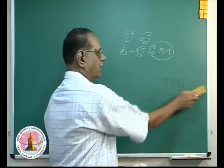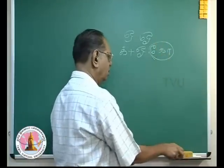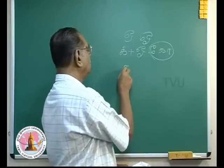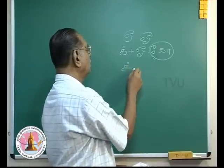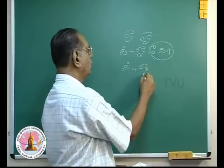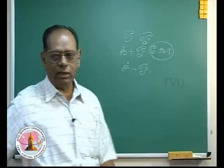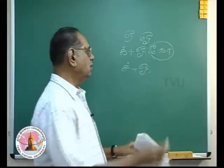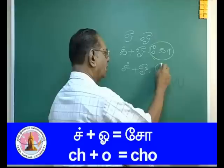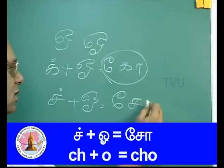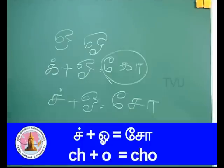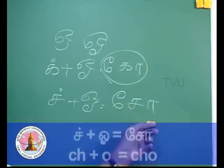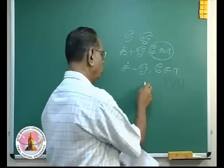The next letter is H plus O and there is no change in the placement of the markers. So this is 'Cho' — the A marker, the consonant, and the A marker give you 'Cho'.